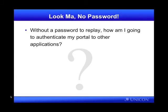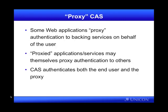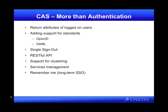With CAS, there's no password to replay. So how can a portal authenticate on your behalf to other applications? CAS has a feature for this called proxy CAS. Some web applications proxy authentication via CAS, using CAS as a trusted intermediary to backing services on behalf of the user. These proxied applications and services can themselves proxy authentication. So you can have a whole stack — if your portal needs to proxy authentication to a webmail application, which in turn proxies authentication to the IMAP server, that chain is entirely viable. CAS authenticates both the end user and the service or services in the proxy chain, and it does this without replaying the end user's password, which is really cool.